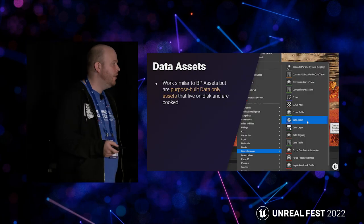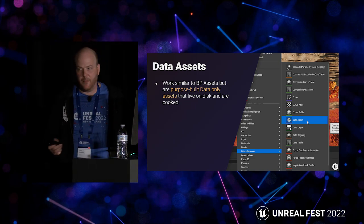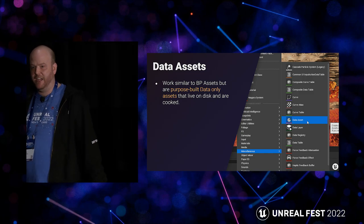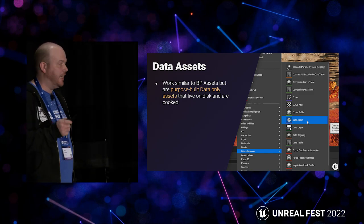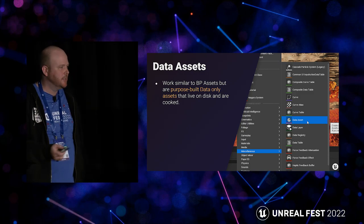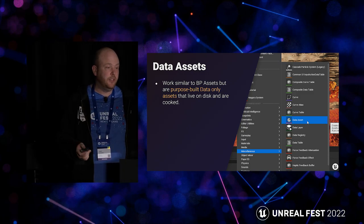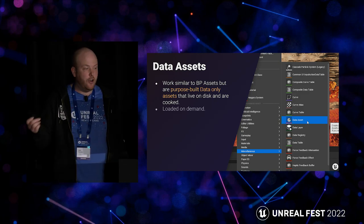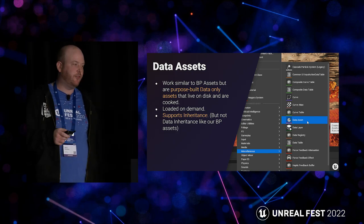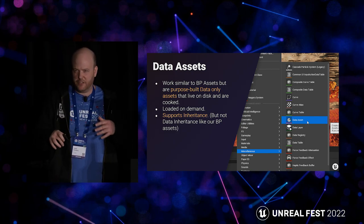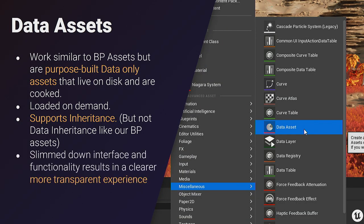Unlike data tables, Blueprint assets also support instance properties, which I'll get to in a moment. The next topic is one of my personal favorites — it's very much like the BP asset, only it's purpose-built for holding static data: the data asset. They work very similarly to BP assets but are totally purpose-built. They live on disk, cooked and loaded on demand as needed. They support inheritance but in a slightly different way — at a class level, not at a per-data-instance level. They have a much cleaner workflow, meaning the experience for designers is more transparent, though this comes at a cost of not being able to override functions within that specific set of data.